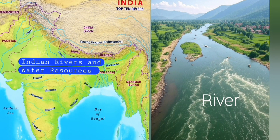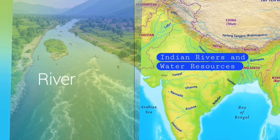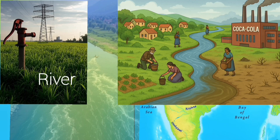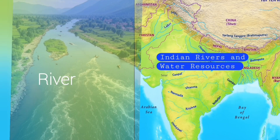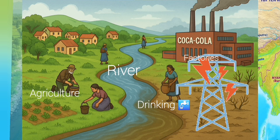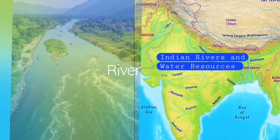India is a land of many rivers and diverse water resources. These rivers and water bodies play an important role in agriculture, drinking water, industries, and electricity generation. They play a very important role in our country.